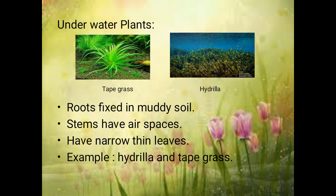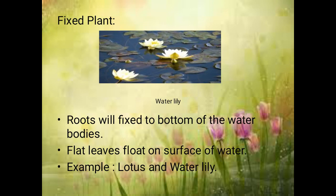Underwater plants include tape grass and hydrilla. Their roots are fixed into muddy soil and these plants can only be seen under the water — they have narrow leaves. Then fixed plants: their roots are fixed to the bottom of water bodies, and they have floating leaves that float on the water. Examples of fixed plants are lotus and water lily.